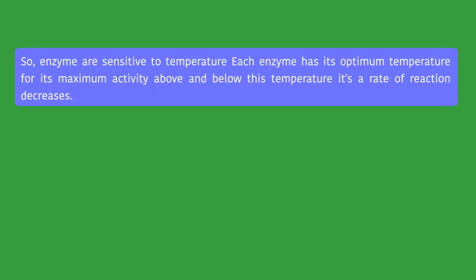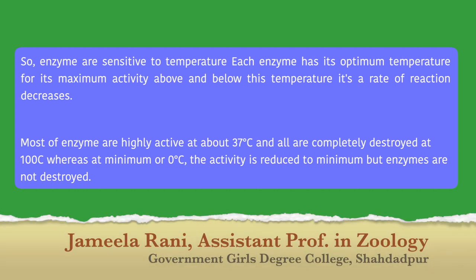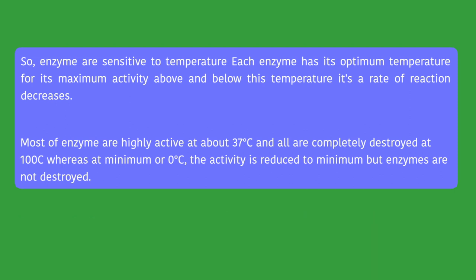Finally, we can say that enzymes are sensitive to temperature. Each enzyme has its optimum temperature for its maximum activity. Above and below this temperature, its rate of reaction decreases. Most enzymes are highly active at about 37 degrees centigrade and all are completely destroyed at 100 degrees centigrade. I have used the word most, not all. Biology is science of exceptions. Whereas at minimum temperature or 0 degrees centigrade, activity is reduced to minimum but enzymes are not destroyed. This was all about the effect of temperature on enzyme activity. I wish, I pray, and I am trying my best to deliver lecture in very simple way that will be understandable for you. Thanks a lot.